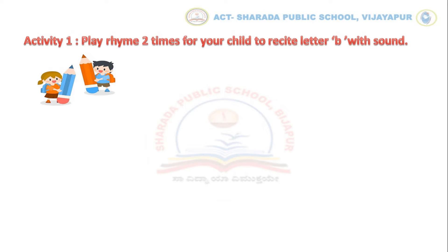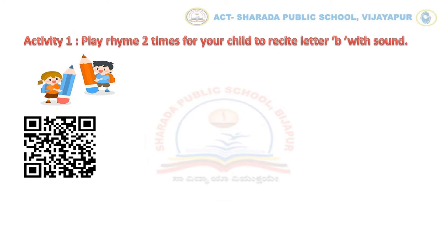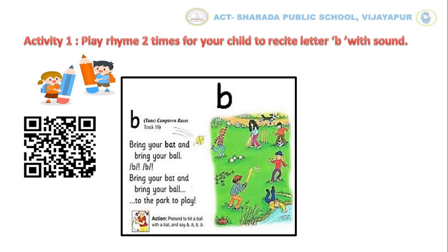Now let us do activity number 1. Play the rhyme two times for your child to recite letter B with sound. Dear parent, scan the given QR code to play the rhyme. Kids, here you can see the song on B sound. First I will sing the song, then repeat after me. Okay?